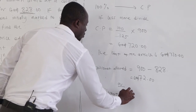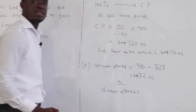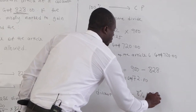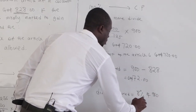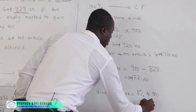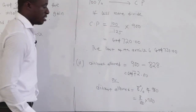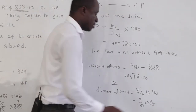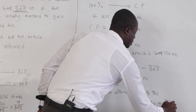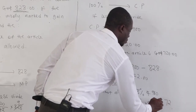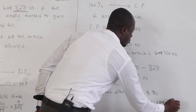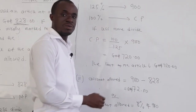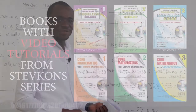Alternatively, the discount allowed is eight percent of the marked price. We have eight percent of 900, which is 8 over 100 times 900. The two zeros cancel, and eight times nine is 72. So our discount allowed is 72 cedis. Thanks for watching.